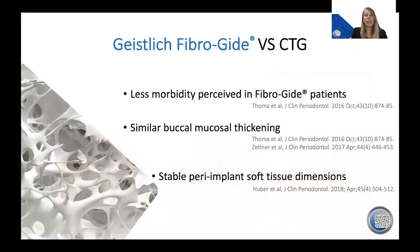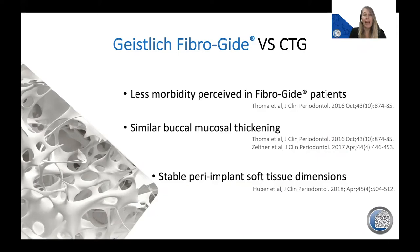We have studies looking at the Geistlich Fibroguide substitute material, which is a xenograft, compared to our gold standard connective tissue graft. Randomized controlled trials are showing a perception of less morbidity when using the Geistlich Fibroguide. Similar studies are showing similarity in terms of buccal mucosal thickening, which is encouraging from a clinical standpoint, and this is translating into stable peri-implant soft tissue dimensions. As a result, Geistlich Fibroguide can be considered as a substitute or alternative to connective tissue grafting for soft tissue augmentation with implant placement.